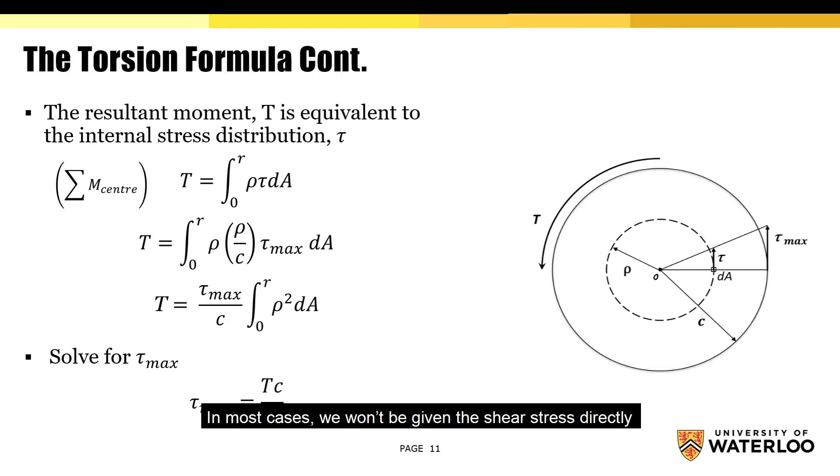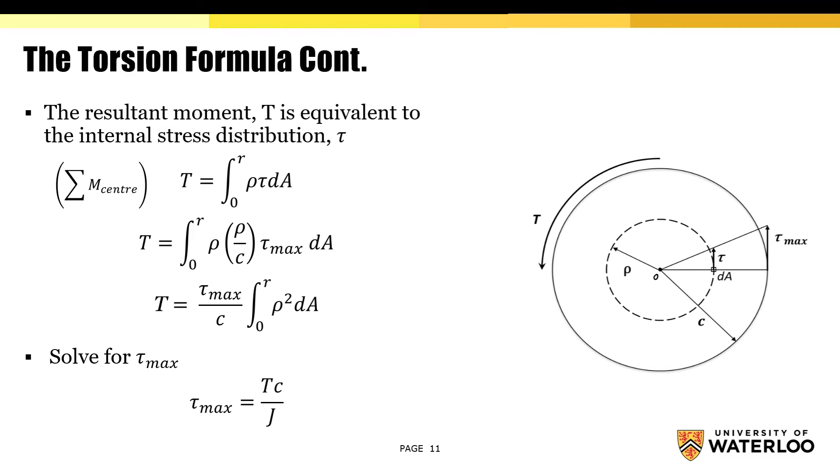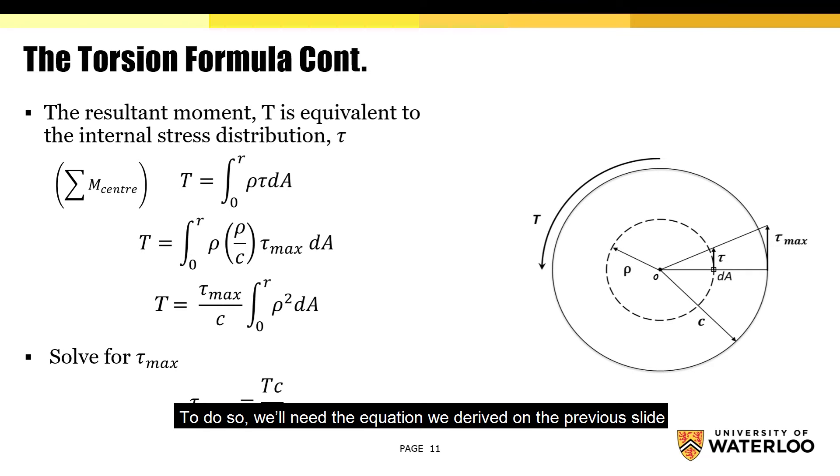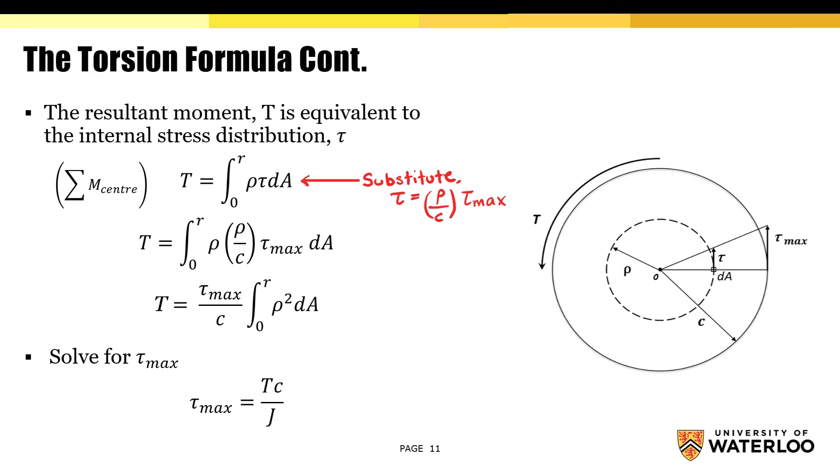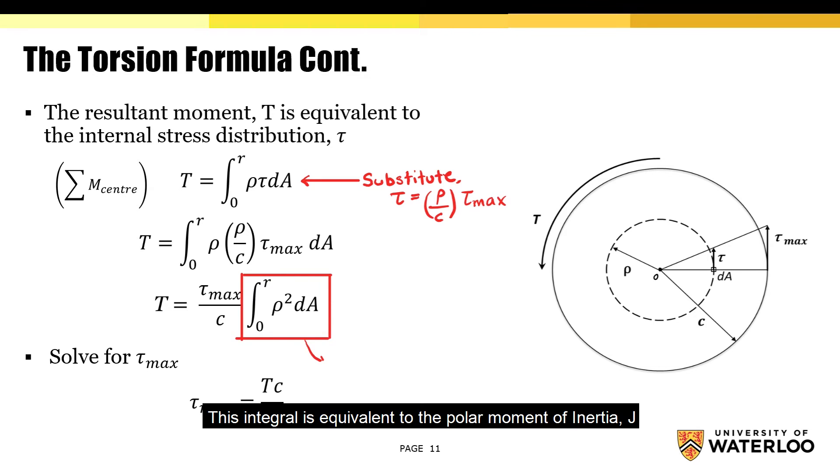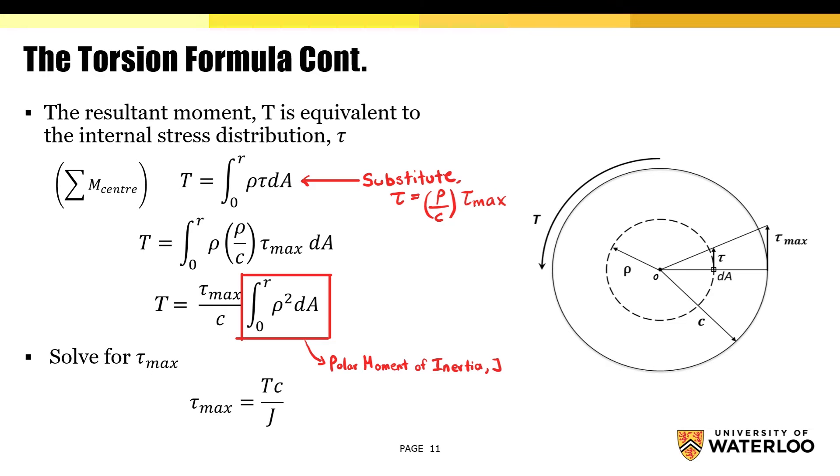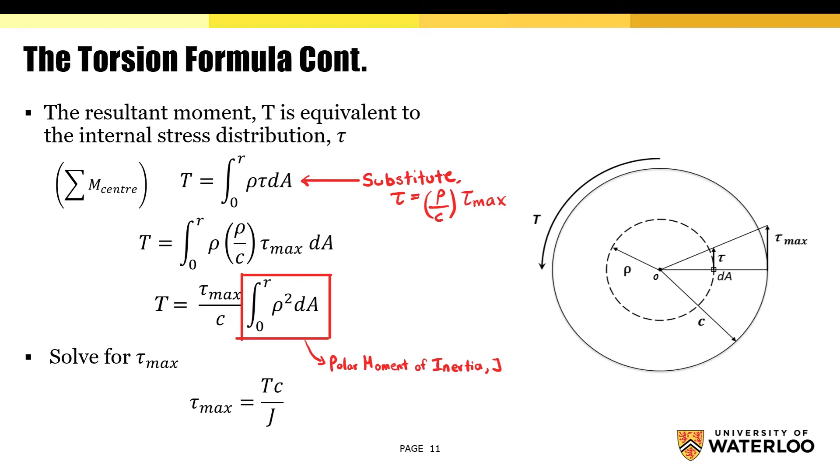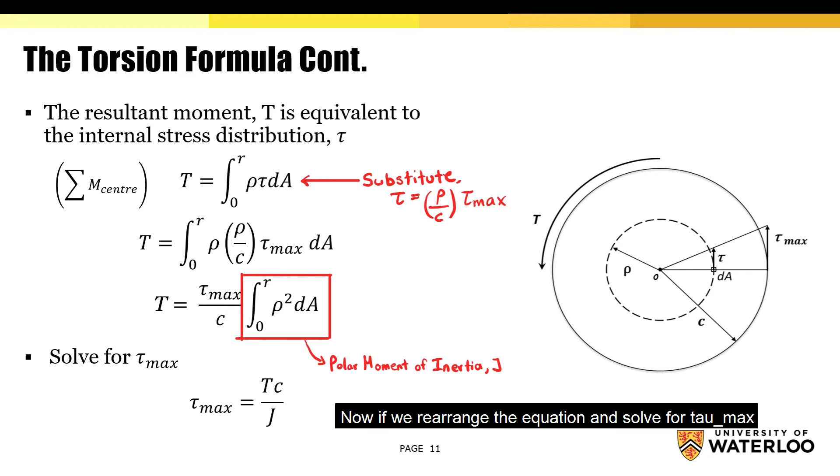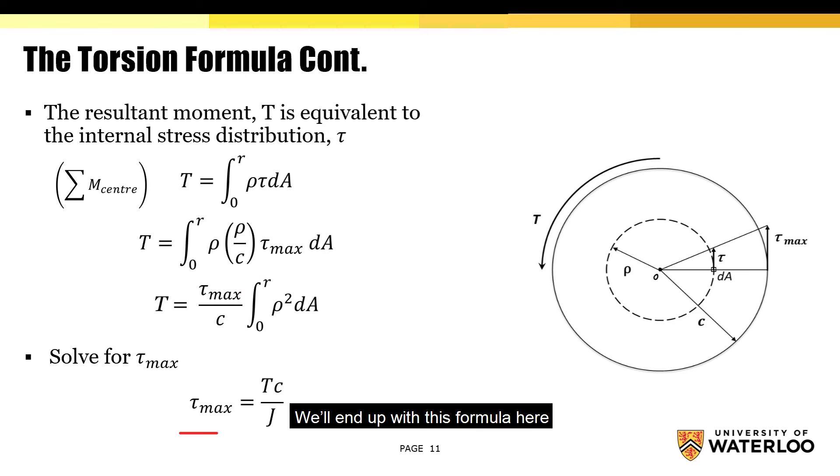In most cases, we won't be given the shear stress directly, and so we have to replace tau with another equation. To do so, we'll need the equation we derived on the previous slide. We can substitute tau with known variables rho and c and the unknown variable tau max. Now we'll remove tau max and c from the integral because these values remain constant. Notice this part here. This integral is equivalent to the polar moment of inertia, J. We can further simplify this equation by replacing the integral with the symbol J. Now, if we rearrange the equation and solve for tau max, we'll end up with this formula here.